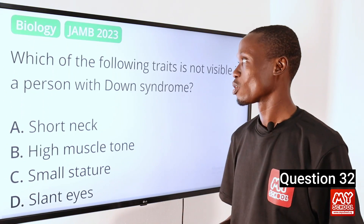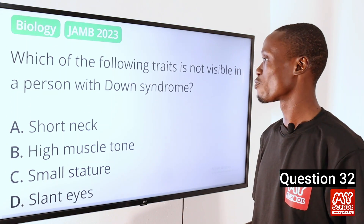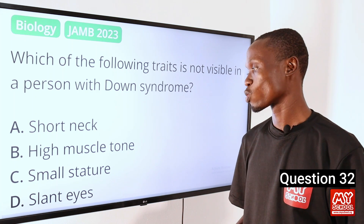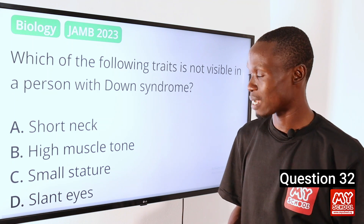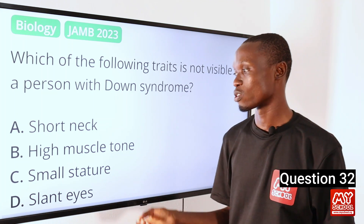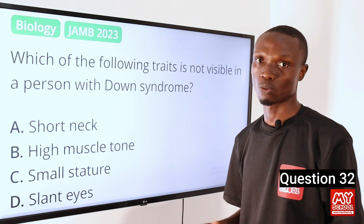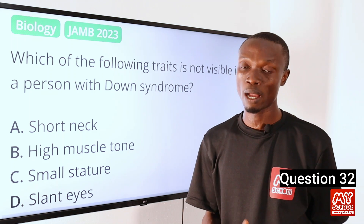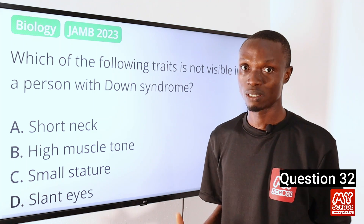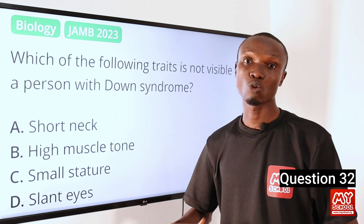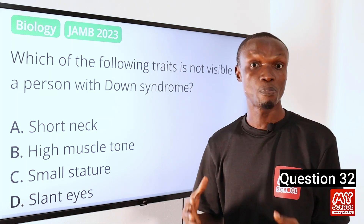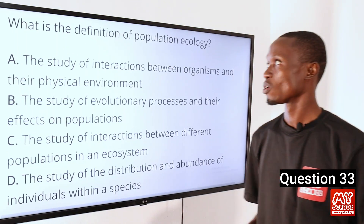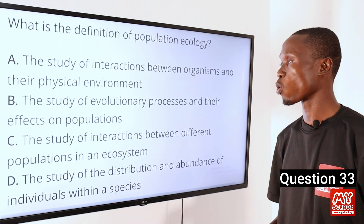Question 32. Which of the following traits is not visible in a person with Down syndrome? A. Short neck. B. High muscle tone. C. Small stature. D. Slanted eyes. The answer is option B, high muscle tone. People with Down syndrome are always known to have intellectual and physical disabilities, but high muscle tone is not visible in a person with Down syndrome. So option B is the correct option.